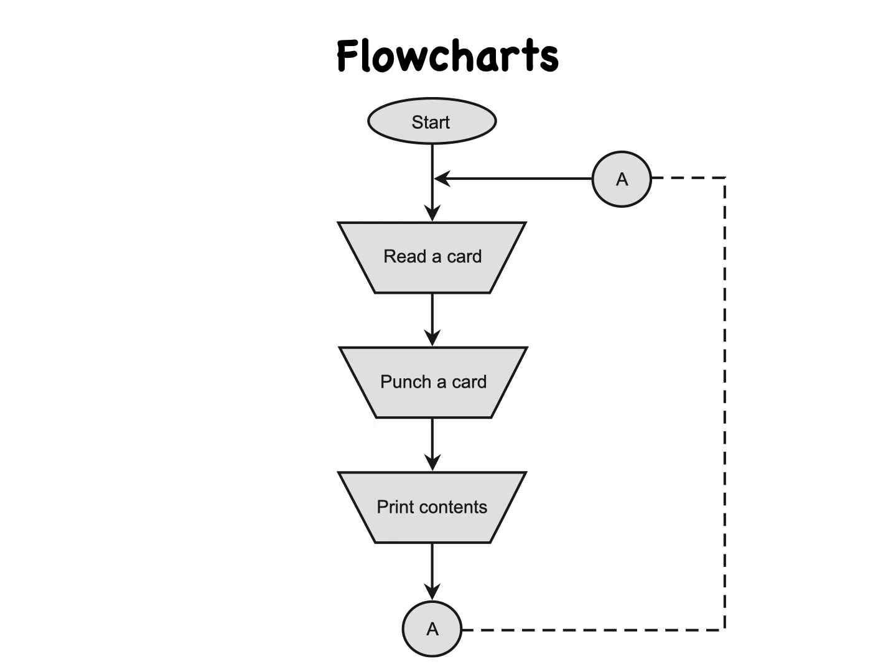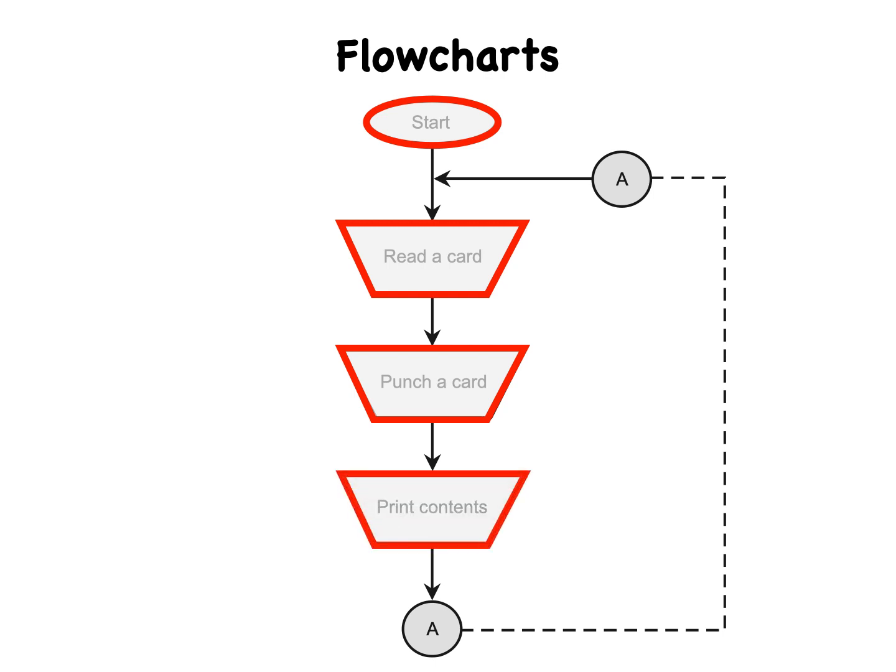Tracing the flow of the program. The program begins at the start oval at the top and proceeds in the direction of the arrows. In the first box below start, the program reads a card. Then the program punches the card's contents, data, as holes in a blank piece of heavy paper, and sends the data to a printer. The program then goes back to the top and reads the next card.